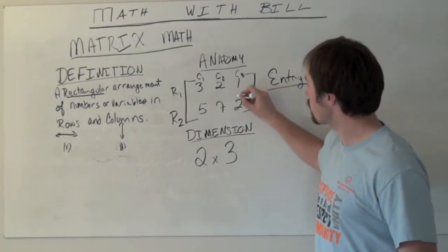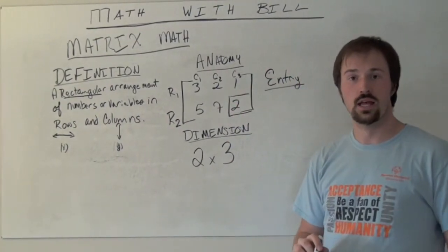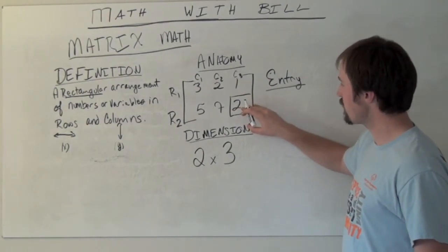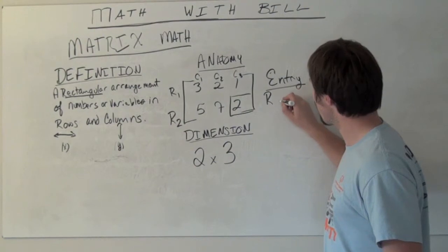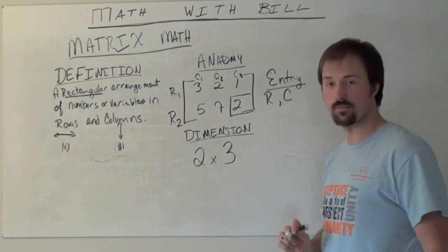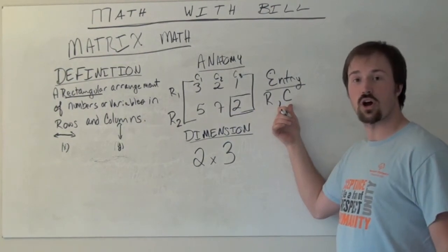So if we were to talk about this 2 right here, the one that I've got in a box, this is entry, and our entries we call, it's going to be the row, comma, column. So it's the number of the row that it's in and then the number of the column that it's in.